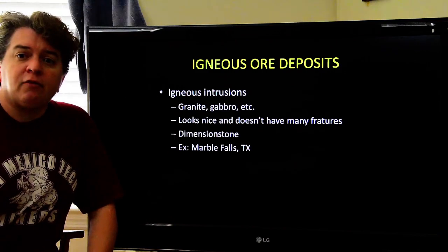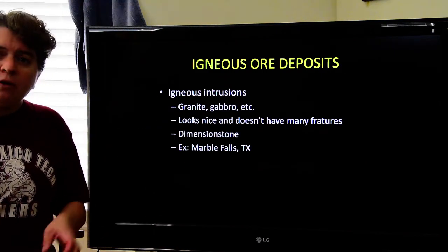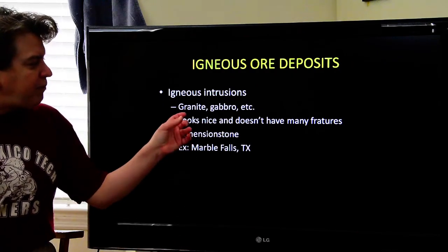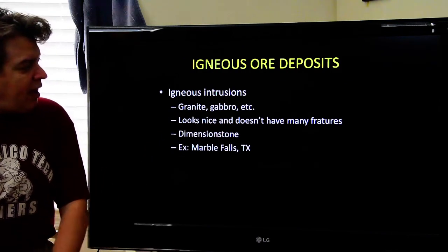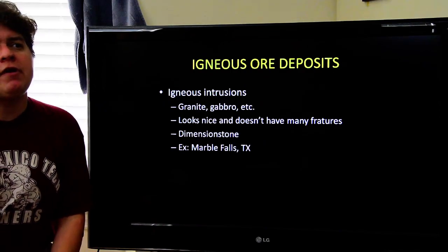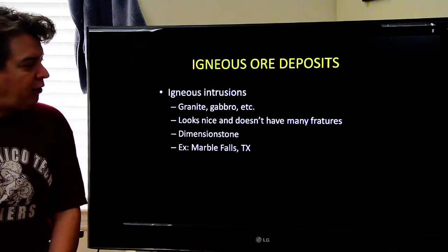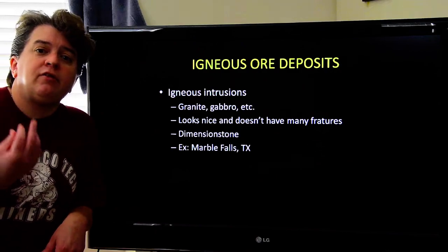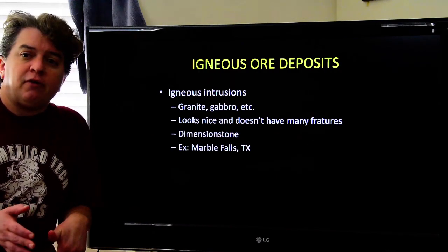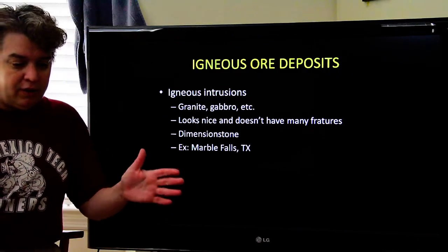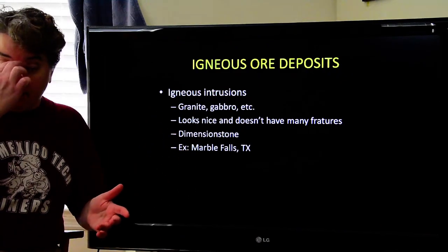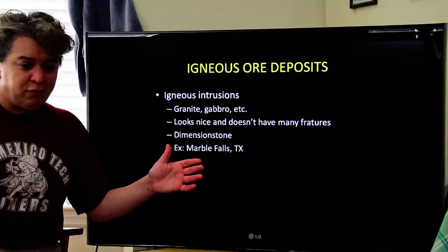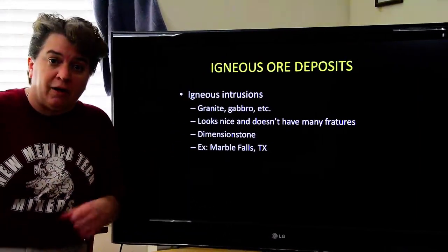The last of the igneous ore deposits are plain old igneous intrusions — bodies of igneous rock like granite or gabbro that cool underground. What makes some of these special is that they look really nice and don't have a lot of fractures. That means they can be dimension stone, where you cut the granite or gabbro into specific sizes — for example, a piece two feet by three feet by nine feet, cut and polished to order.